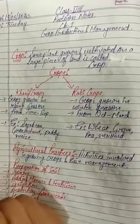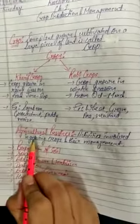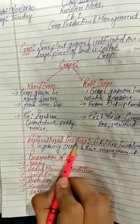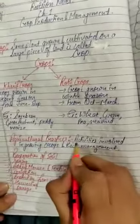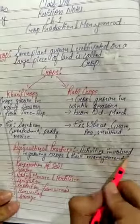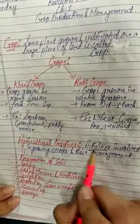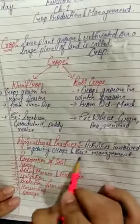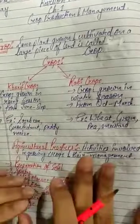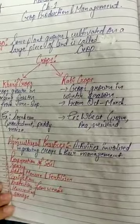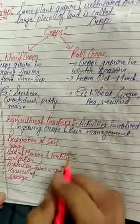Now, what are agricultural practices? Agricultural practices means activities involved in the growing of crops and their management. Activities involved in the growing of crops and their management is called agricultural practices.